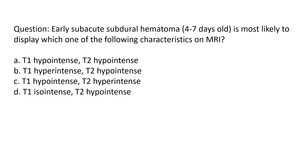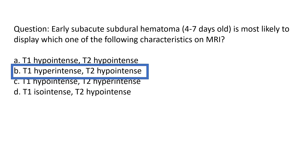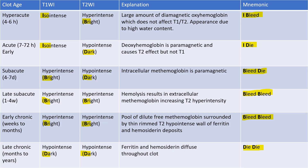It is very difficult to remember T1 hypo, hyper, and iso, so there is a specific mnemonic you can use to solve such MCQs. The answer to this particular question is T1 hyper intense and T2 hypo intense. We'll understand how you can arrive at such an answer using this mnemonic.